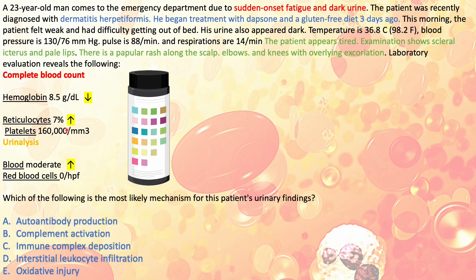So from this lab parameter I've figured out there is intravascular hemolysis. The examiner might also give you haptoglobin, which would be a giveaway, but we can also determine intravascular hemolysis from the hemoglobinuria alone.